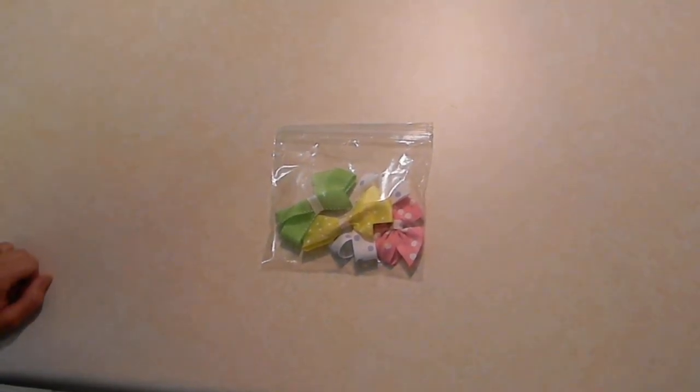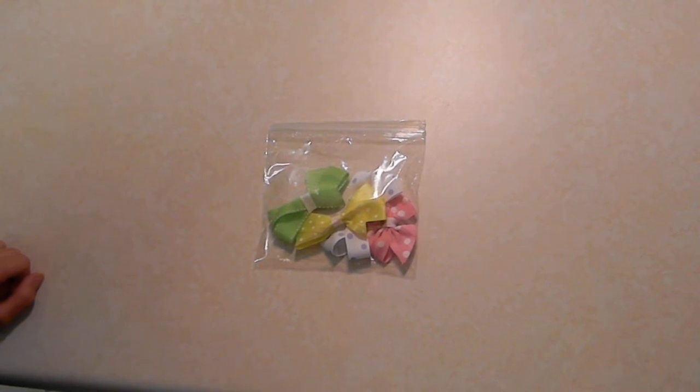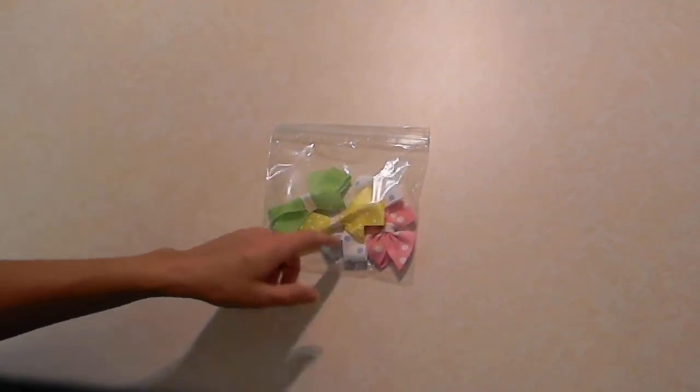This is an example of how to display your hair bows after your little girl's outgrown them. First, take a group of hair bows and place them in a baggie.